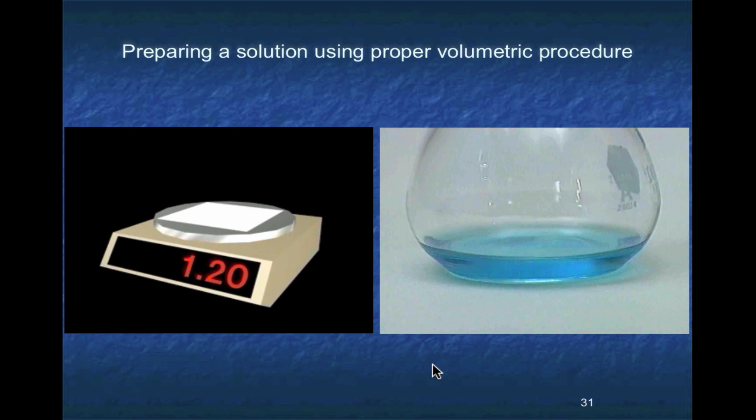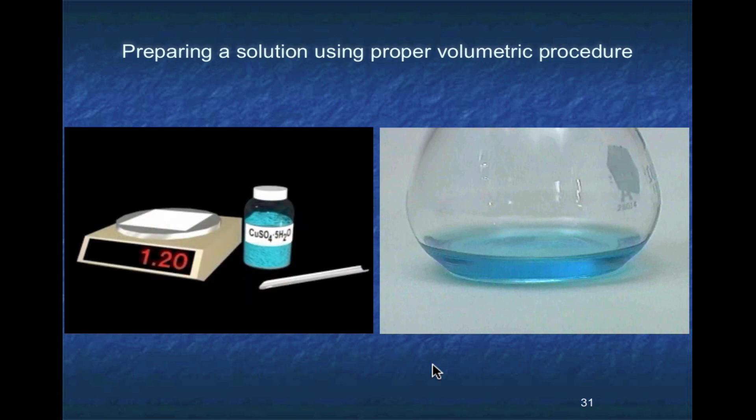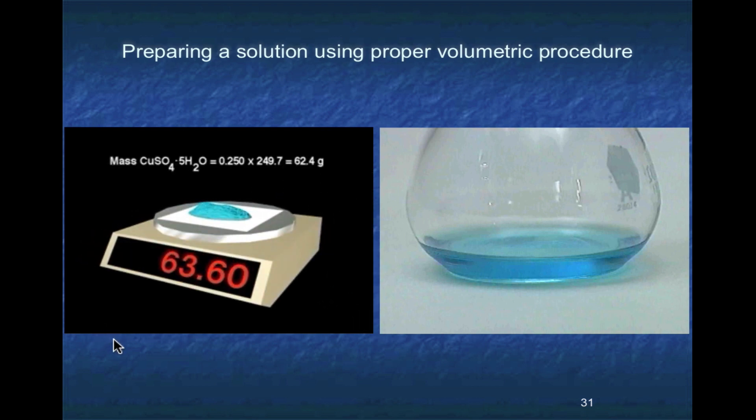To prepare a solution of known concentration from a solid solute, we must first weigh out an appropriate amount of the solid. For example, to prepare 250 milliliters of a one molar solution of copper sulfate, we first weigh out 0.250 moles of copper sulfate. Most commonly copper sulfate is available as the pentahydrate. The formula mass of copper sulfate pentahydrate is 249.7. We weigh out precisely one fourth of this mass, 62.4 grams.